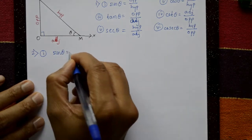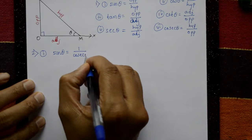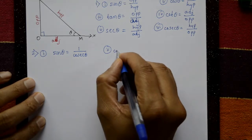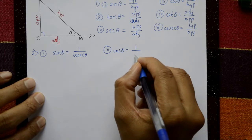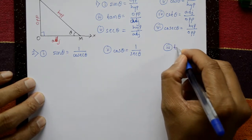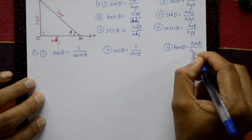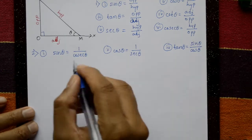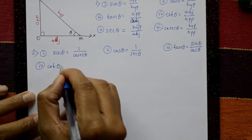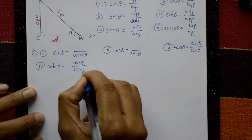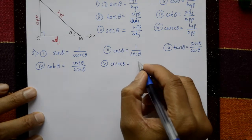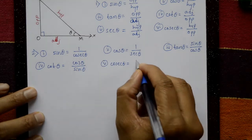Now the reciprocal identities. First: cosine theta is equal to one by secant theta. Second: cos theta is equal to one by secant theta. Sin theta upon cos theta gives tan theta.